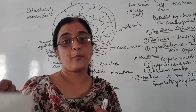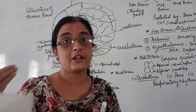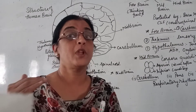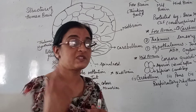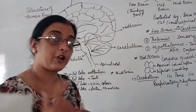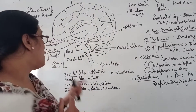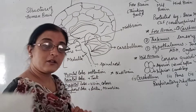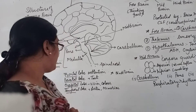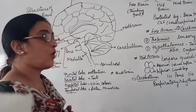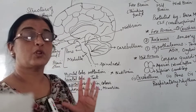Forebrain is divided into three parts: cerebrum, thalamus, and hypothalamus. Midbrain is not divided into any further parts.